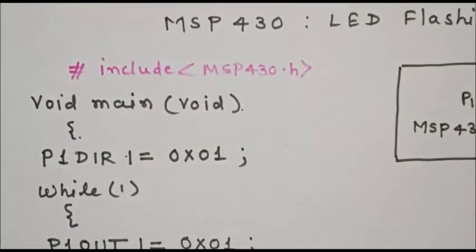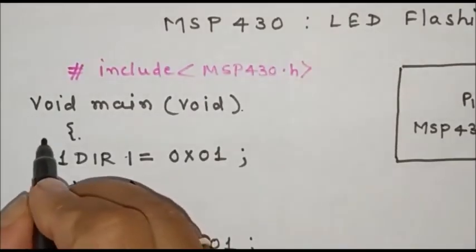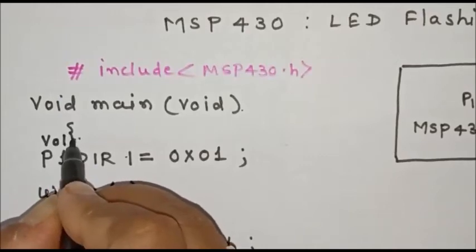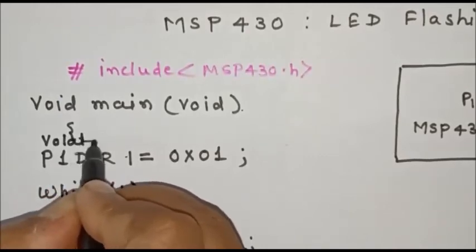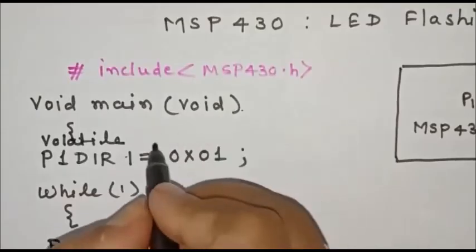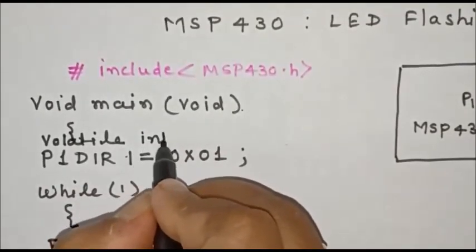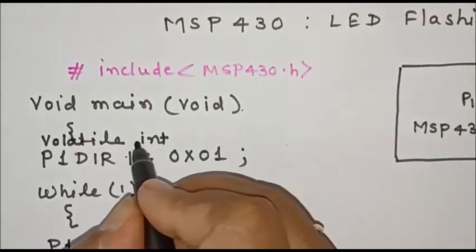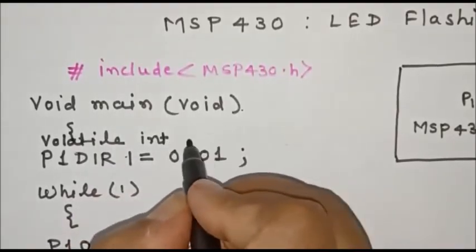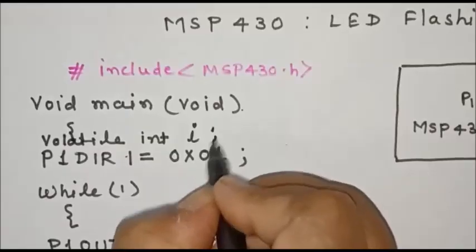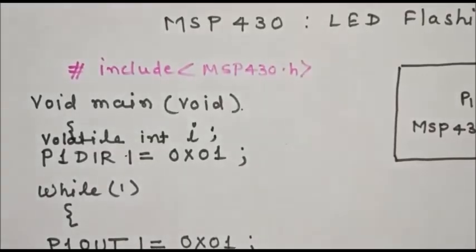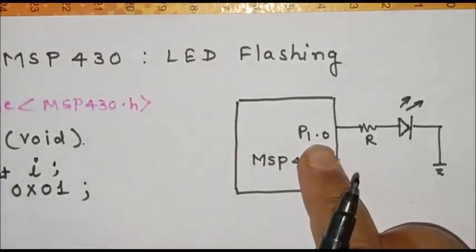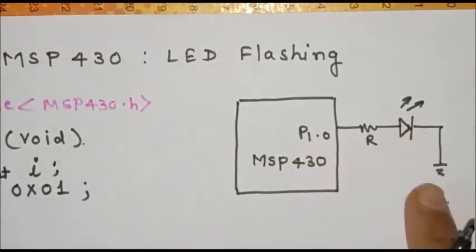Now since we have used variable i, you have to declare this i. So this declaration for MSP430 for variable is volatile. Integer, if we want to declare we'll use int. If you want to use it as an unsigned integer you can write volatile unsigned integer and write the name of variable i. So this program will flash the LED connected at port terminal P1.0 with some delay.